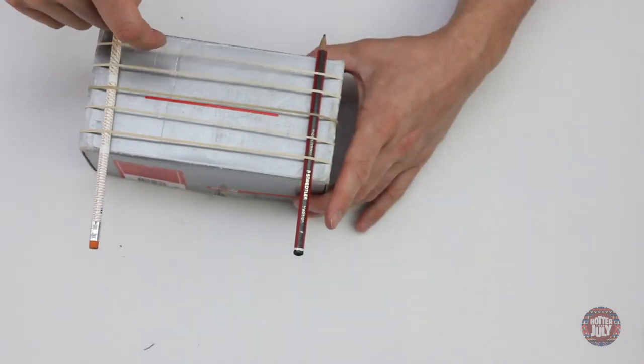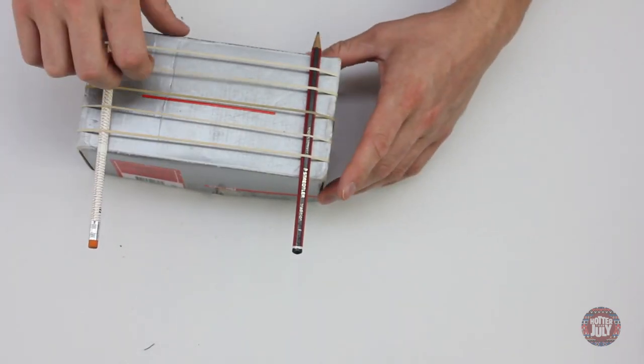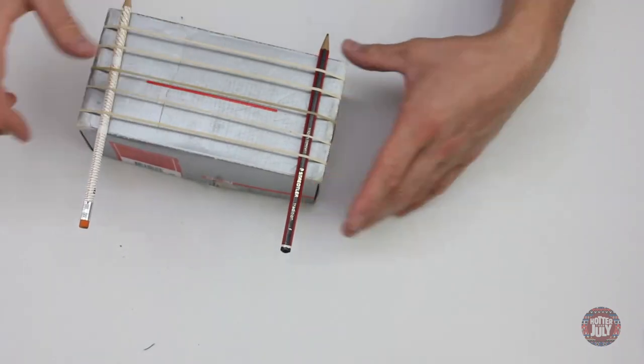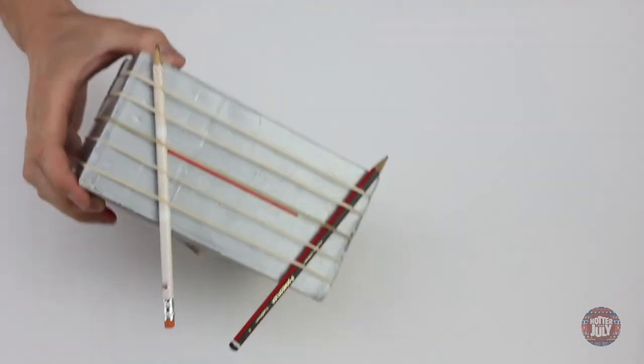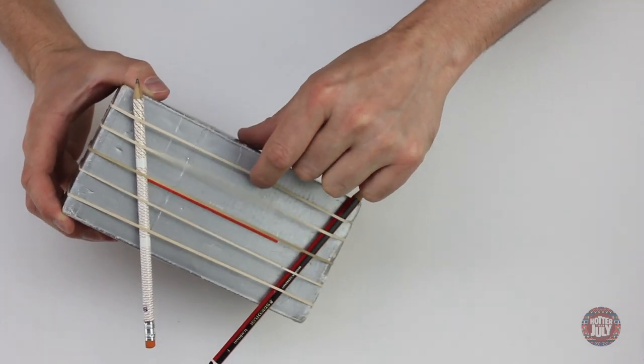Stretch the rubber bands like so to adjust the tuning. Not bad for a really simple instrument. But this type of instrument with rubber bands is really hard to keep in tune.